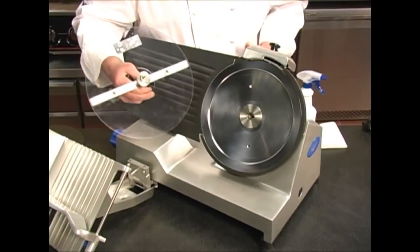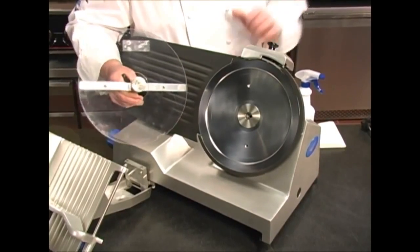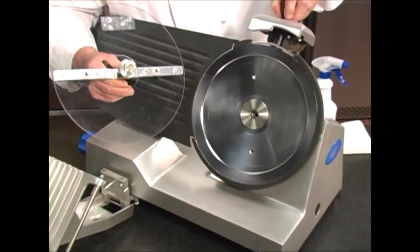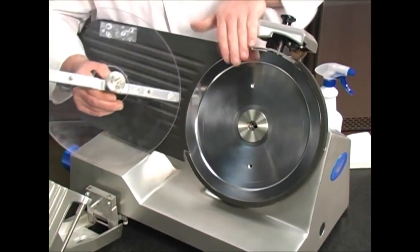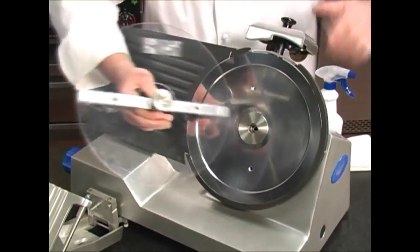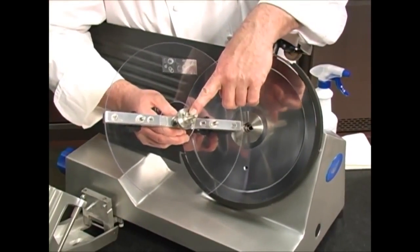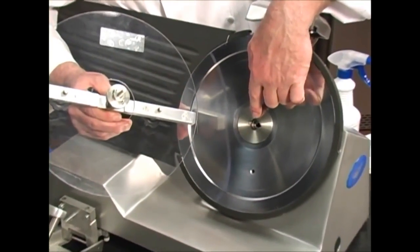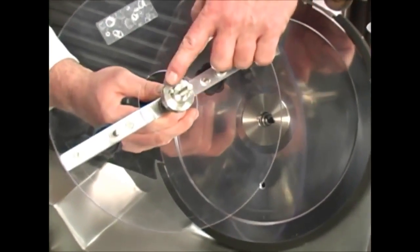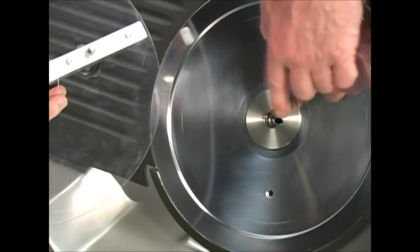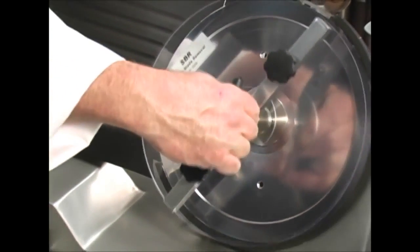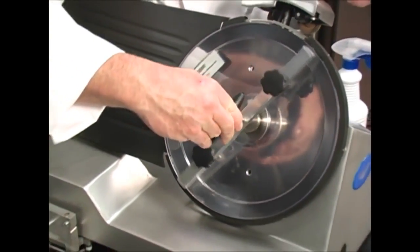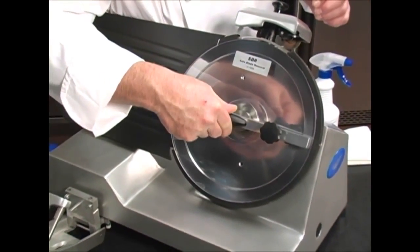For Volrath slicers equipped with the blade removal tool first we have to make sure that we get the sharpening stones up and out of the way. This allows the removal tool to fit flush to the blade. Next we'll take the center of the blade removal tool and put it into the center of the slicer blade making sure that the two pins on the tool fit into the two cutouts on the blade. We do this by centering the tool and then twisting until we seat it into the blade.